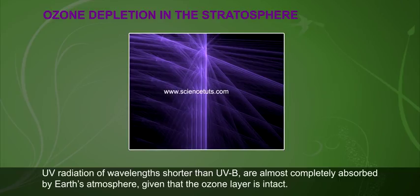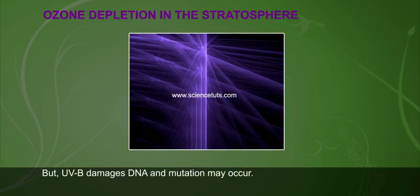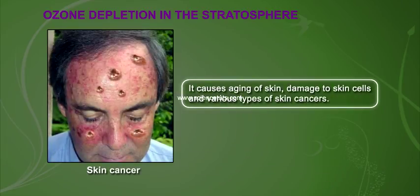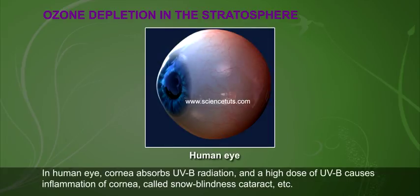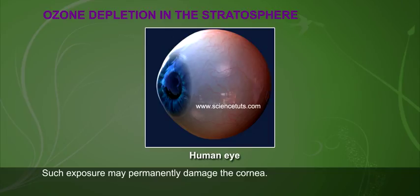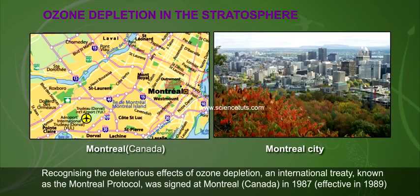UV radiation of wavelengths shorter than UVB are almost completely absorbed by Earth's atmosphere when the ozone layer is intact. However, UVB damages DNA and mutations may occur; it causes aging of skin, damage to skin cells, and various types of skin cancers. In the human eye, the cornea absorbs UVB radiation, and a high dose of UVB causes inflammation of the cornea called snow blindness, cataracts, etc. Such exposure can permanently damage the cornea.